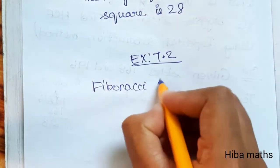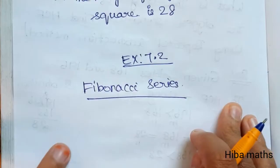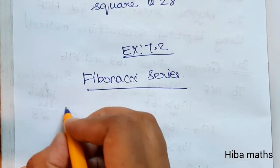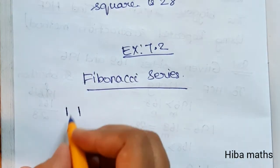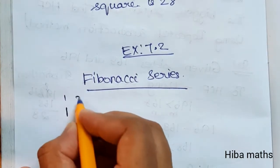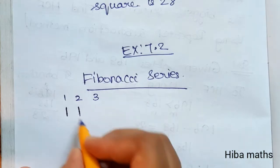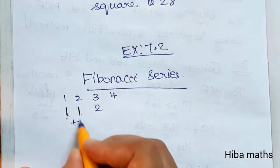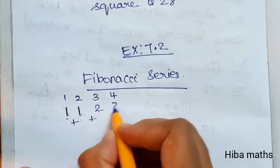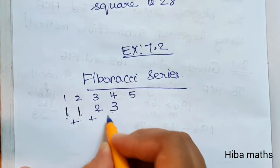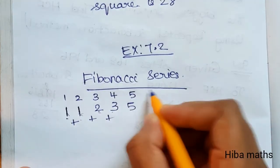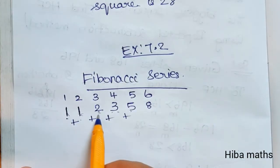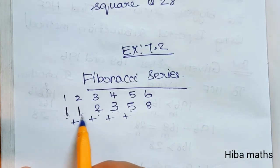We will explain what the Fibonacci Series is. The first number is 1, the second number is 1, and the third number is 2. Because 1 plus 1 is 2. The fourth number is 3, because 1 plus 2 is 3. The fifth number is 5, because 2 plus 3 is 5. The sixth number is 8, because 3 plus 5 is 8.